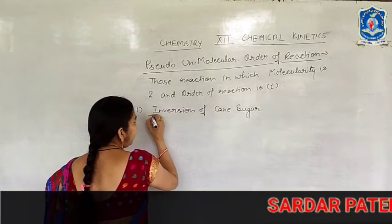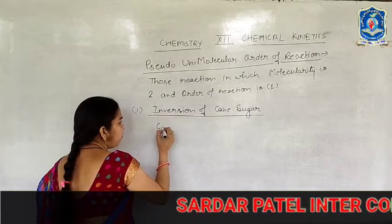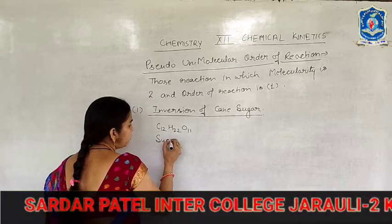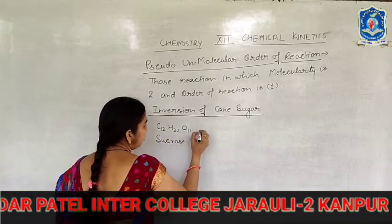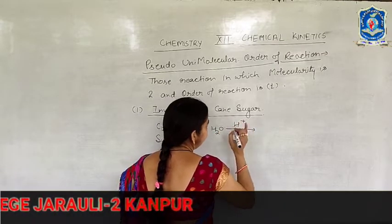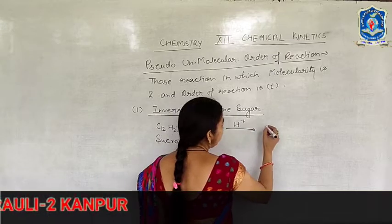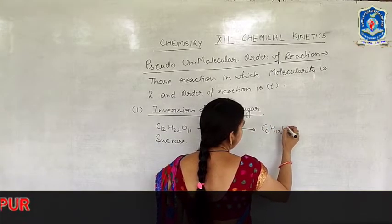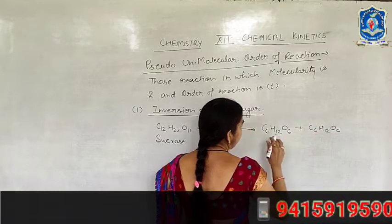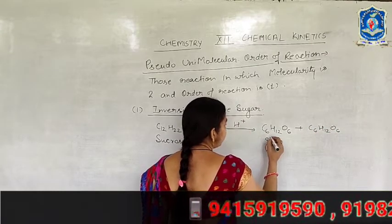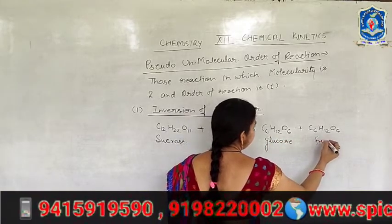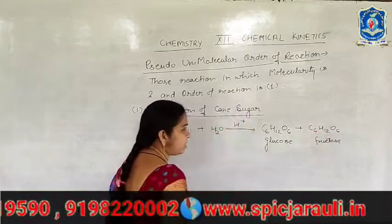We know that C12H22O11 is known as sucrose. When it undergoes hydrolysis in acidic medium, it will convert into C6H12O6 and C6H12O6 — one molecule is known as glucose and the other molecule is known as fructose.